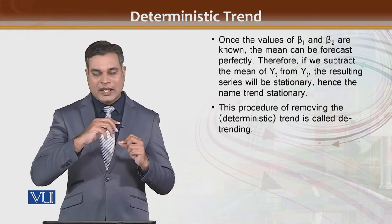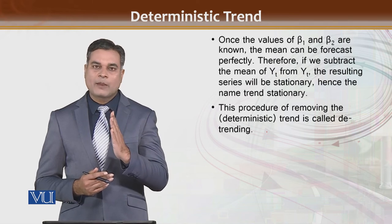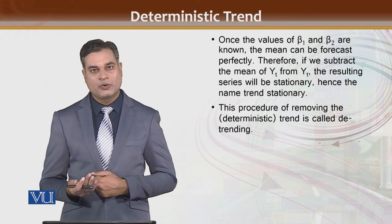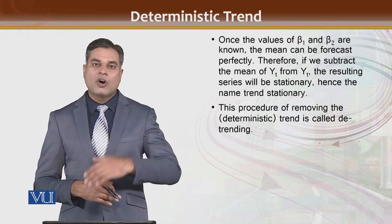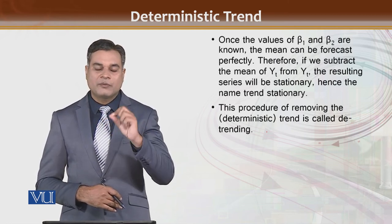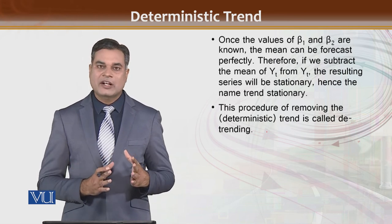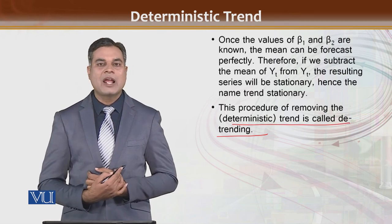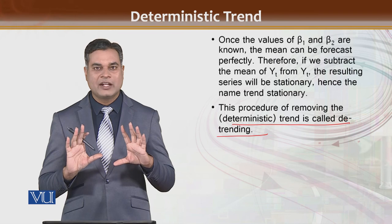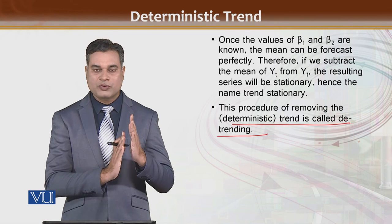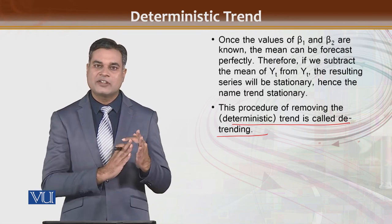Hum kehte hain detrending — ke aapke paas jo series ka trend aa raha hai, us trend ko khatam karne ke liye har yt mein se yt-bar minus karte jayenge toh aapke paas ek nai series aayegi aur wo series stationary ho jayegi. Jaise maine share kiya GDP ka data hai — with the passage of time increase ho raha hai, toh hum usko detrend kar denge. Detrending karne se aapki non-stationary series stationary mein convert ho jayegi. Iss deterministic trend ko jab hum khatam karte hain, usse simply hum kehte hain the process of detrending — trend khatam karna. Aur trend khatam hone se aapki series non-stationary se stationary convert ho jayegi aur unit root ka problem bhi resolve ho jayega by detrending the series.